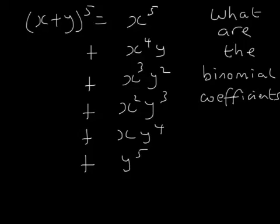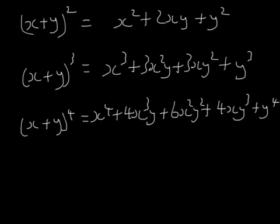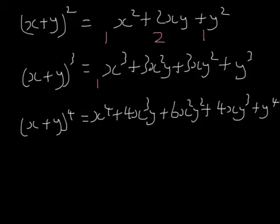So the question is: what are the binomial coefficients? There are actually four ways of working this out, and you really should know all four of them. Let's go back to look at x plus y squared, cubed, and to the power of 4. The binomial coefficients for x plus y squared are 1, 2, 1. For x plus y cubed, they are 1, 3, 3, 1. And for x plus y to the power of 4, they are 1, 4, 6, 4, 1.